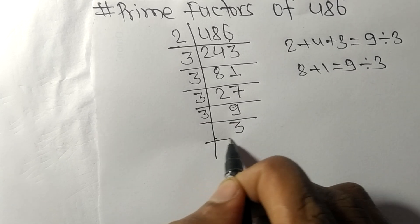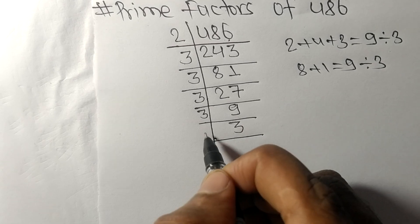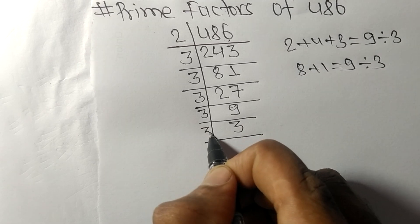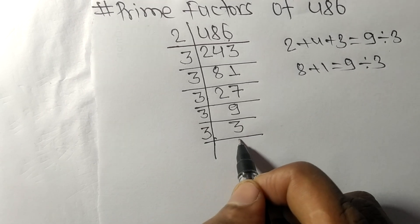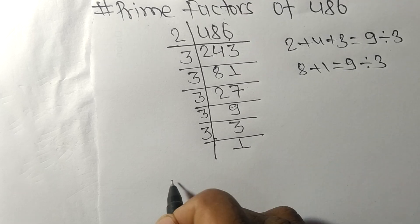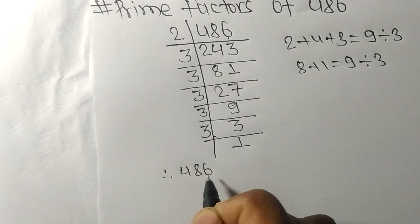And now at last we get 3, which is divisible by 3 itself, and we get 1. Therefore, 486 is equal to...